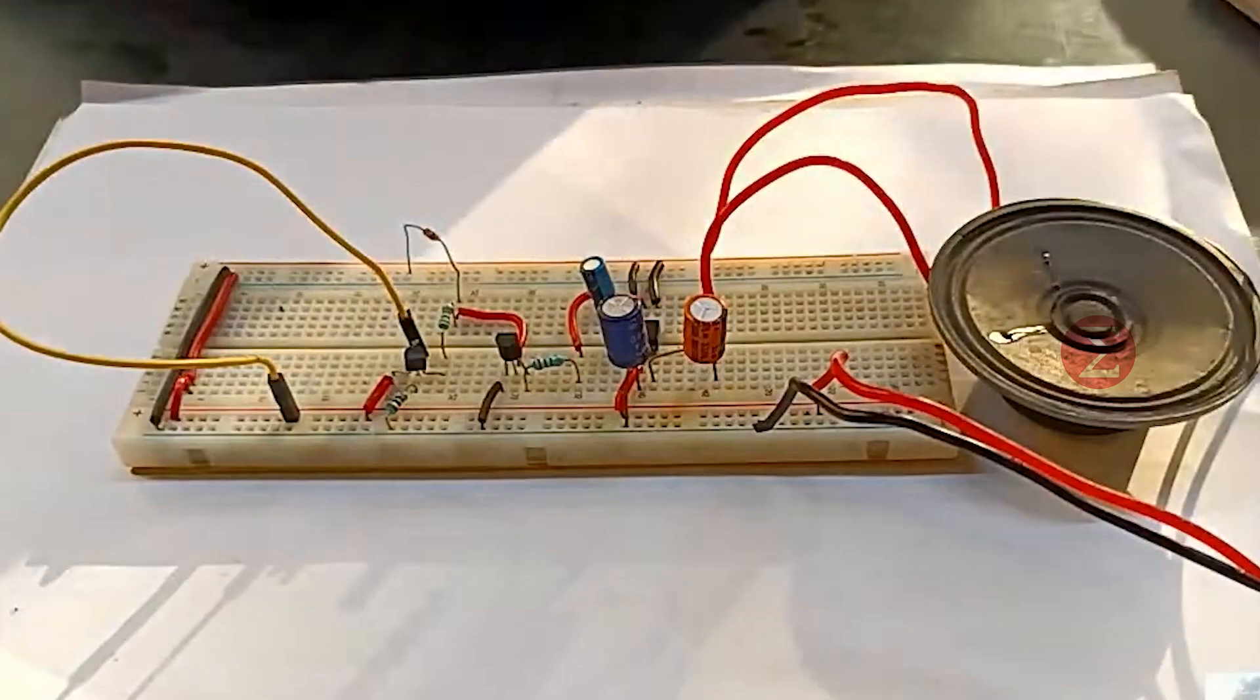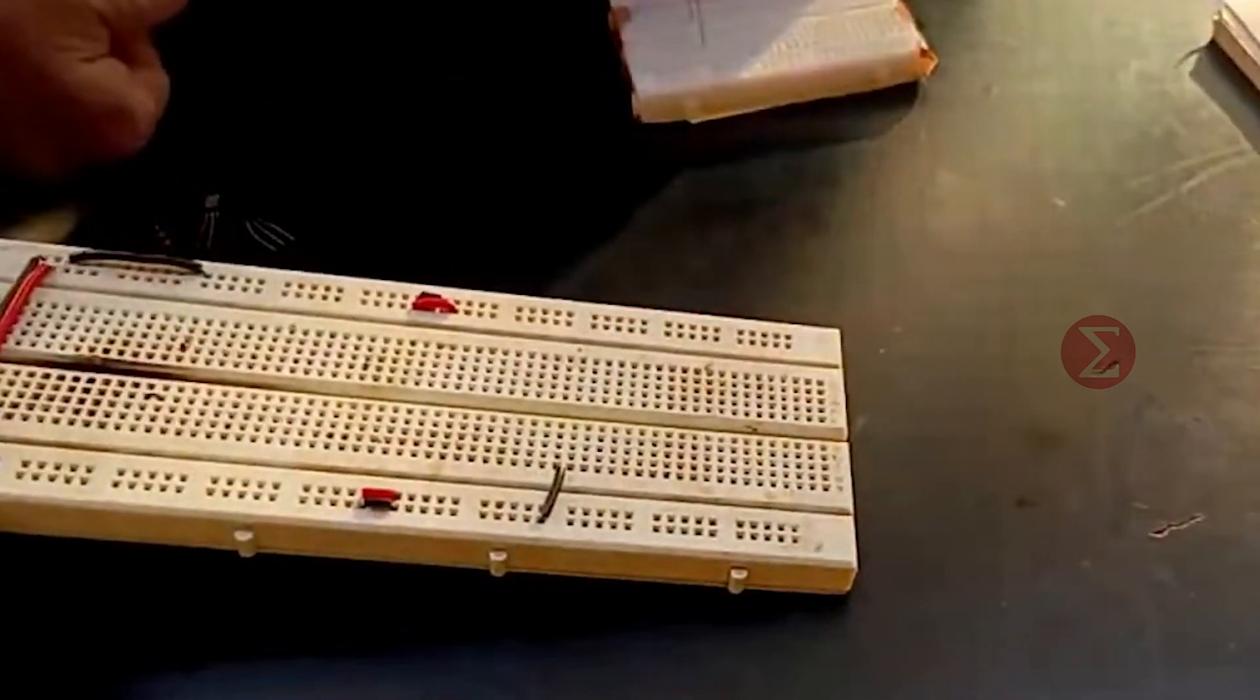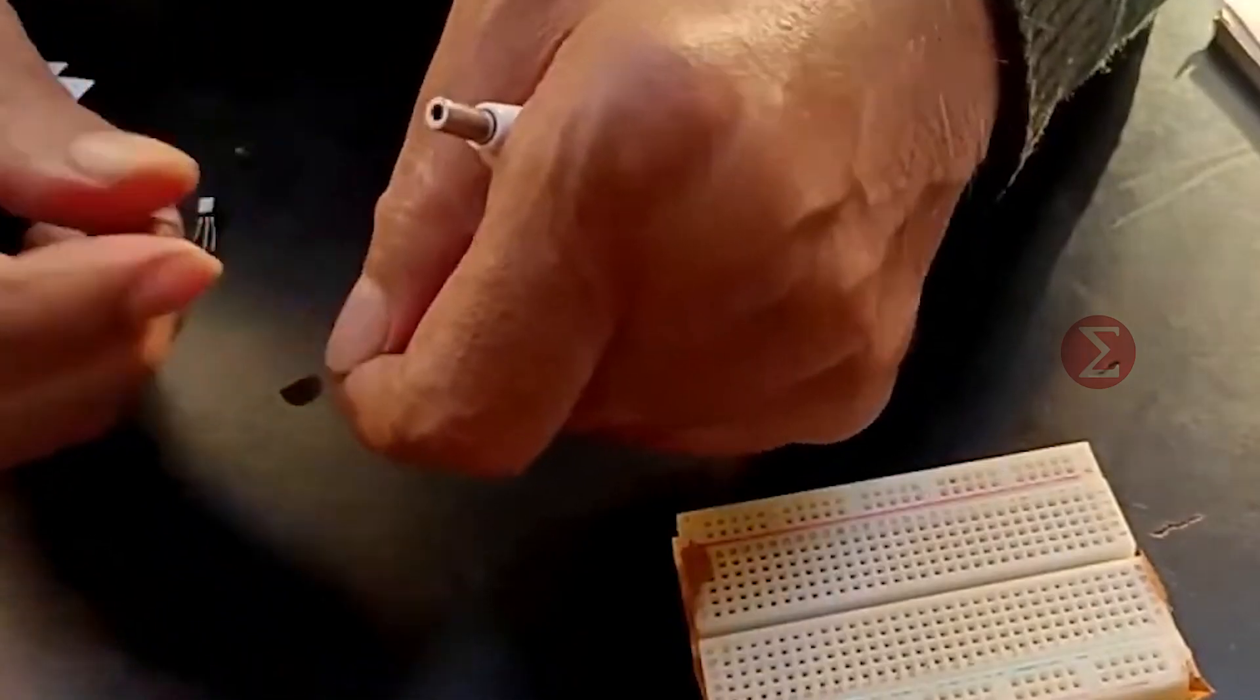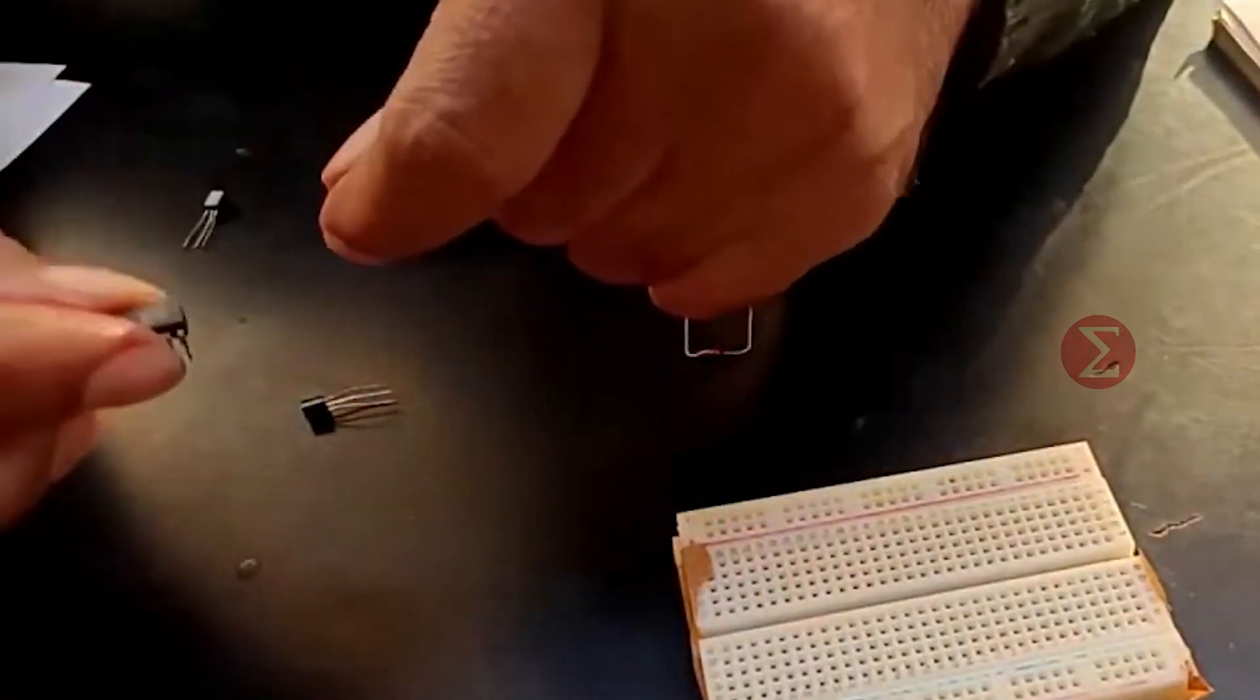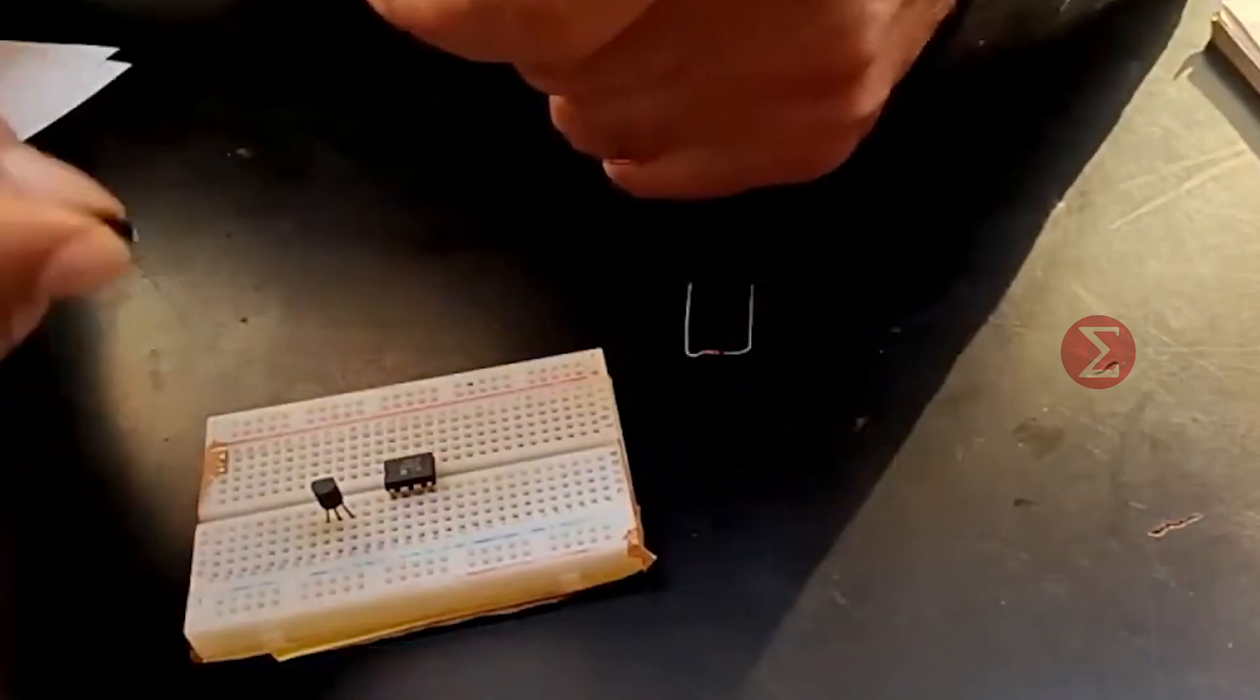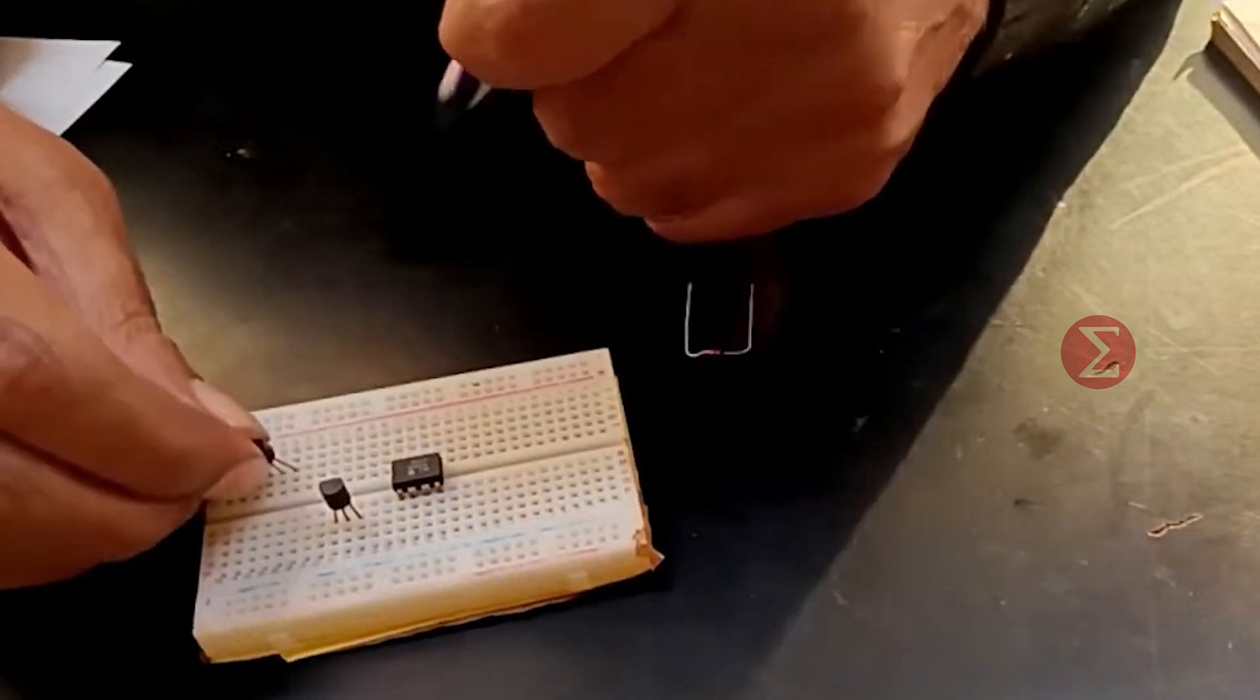You can see the complete assembled circuit on the breadboard. Before starting with the circuit we have connected red and black wires to the breadboard for positive and negative lines. This is PNP transistor, melody generator IC and low power amplifier IC. Like this we assemble ICs on a breadboard.